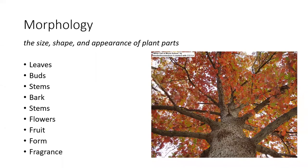Woody plant identification is based on morphology — the size, shape, and appearance of plant parts. A rudimentary knowledge of plant anatomy is essential to recognize these plant parts and their characteristics, especially when using a key. We usually concentrate on the leaves when looking at trees and shrubs. Classification is often based on the reproductive structures like flower and fruit. But if you only learn the leaves of a tree, when wintertime rolls around you're not going to do very well at identification.